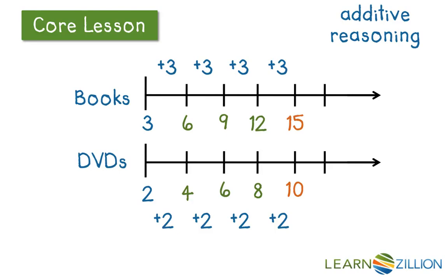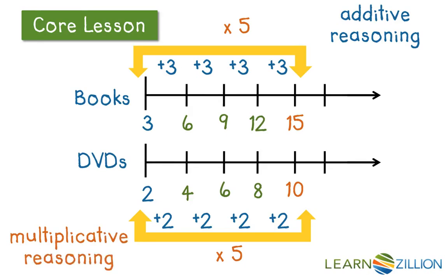Now, you may remember that there is a faster way than to add 3 plus 3 plus 3 plus 3. Can you think of a faster way to get from 3 to 15 instead of this repeated addition? You may remember that multiplication is repeated addition, so multiplying 3 times 5 would do the same work, just faster. In theory, we can then multiply by 5 for the DVDs as well, and 2 times 5 will in fact equal 10. This is considered multiplicative reasoning. It's based on the same concept as additive reasoning, it's just faster.